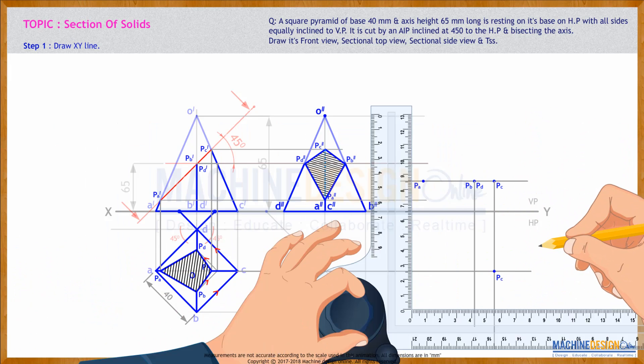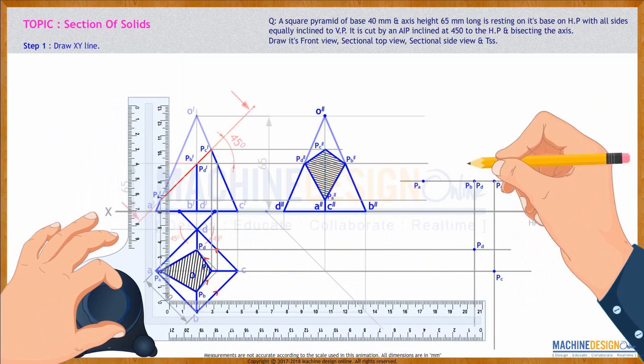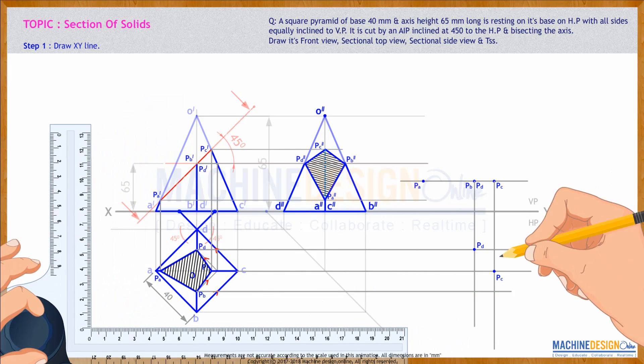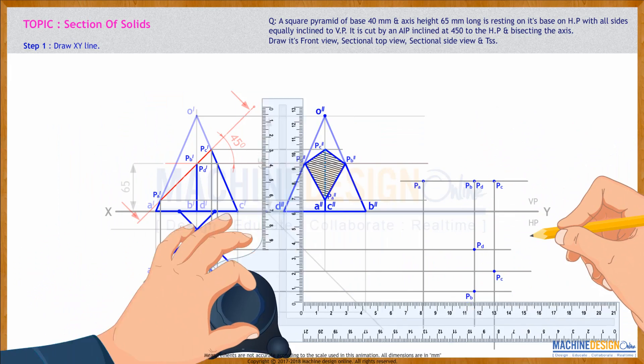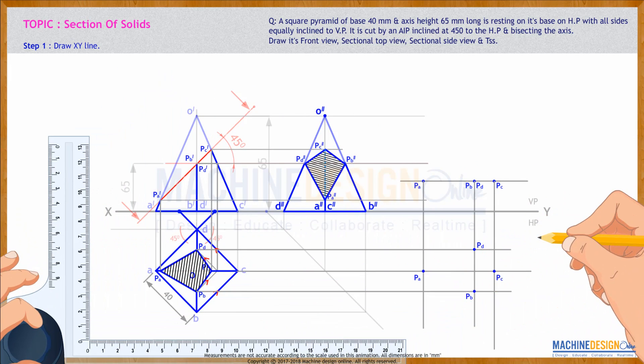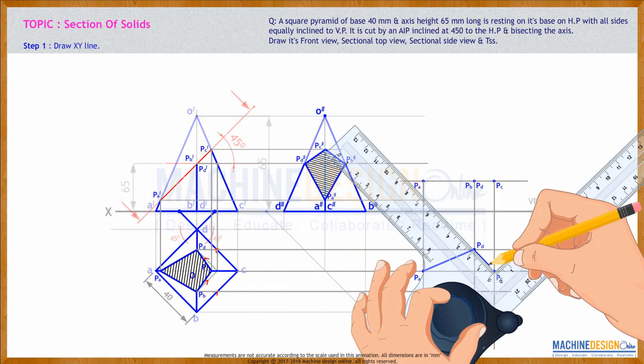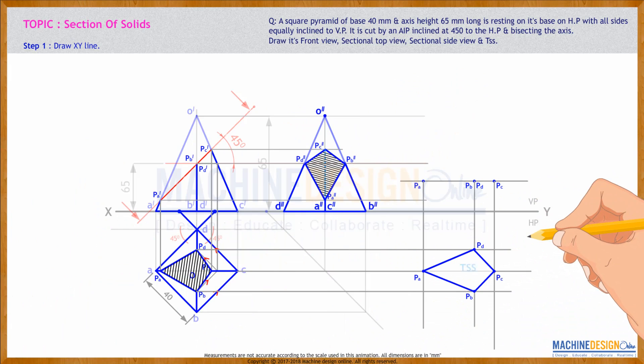Same way you extend D and D from here. You will get PD. D from here you will get PB. Same way you take PA from up, and PA from here you will get PA. Now you join this. So this is TSS, true sectional shape.